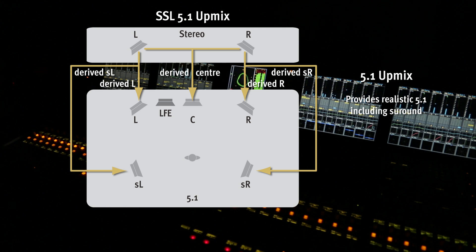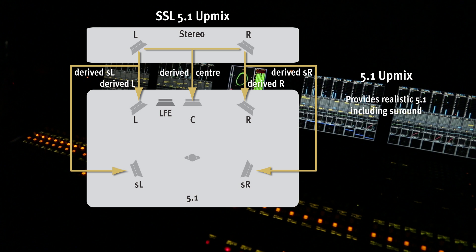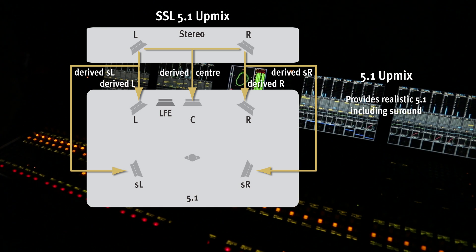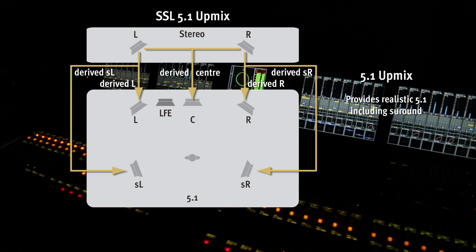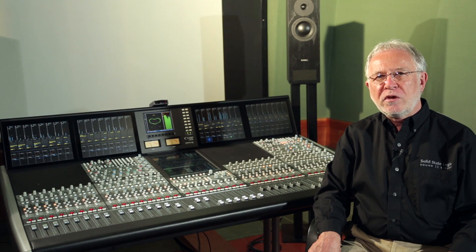...and distributes this to the five main surround channels, resulting in a realistic 5.1 sound field. The user has control over centre divergence, centre gain, and the front-rear image bias using the channel strip free controls. The divergence parameter can remove the centre component entirely if a 4.1 upmix is required. The resulting 5.1 signals can be downmixed back to stereo without undesirable comb filter artefacts, as no delays are involved in the process.